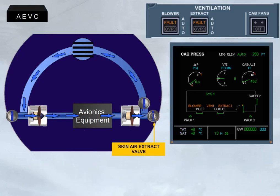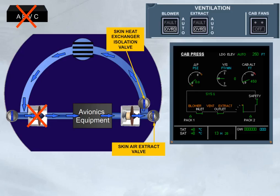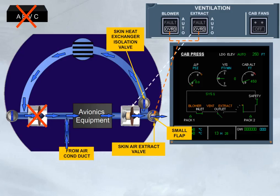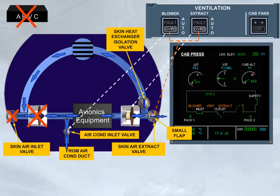On ground, in case of an AEVC failure, both fault lights come on. Setting both push-button switches to override allows the ventilation system to be reconfigured by keeping the skin exchanger isolation valve open, by opening the small flap of the closed skin air extract valve, by transferring the control of the extract fan to the push-button switch, and by adding air from the air conditioning duct through an air conditioning inlet valve. Note: as the control of the skin air inlet valve is lost, its position will be the one before the fault occurs.